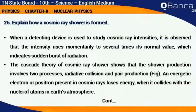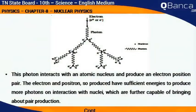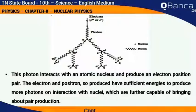This photon interacts with an atomic nucleus and produces an electron-positron pair. The electron and positron so produced have sufficient energy to produce more photons on interaction with nuclei, which are further capable of bringing about pair production.